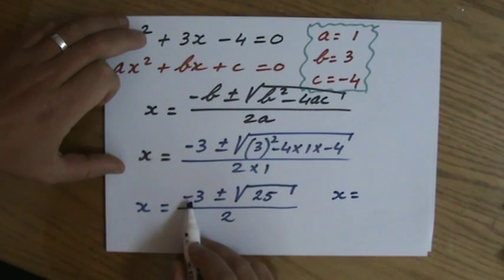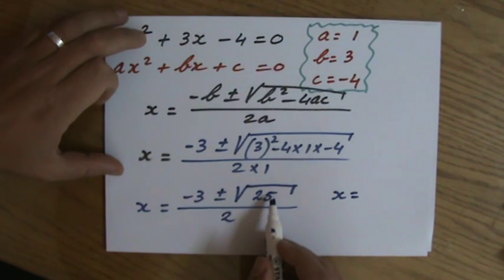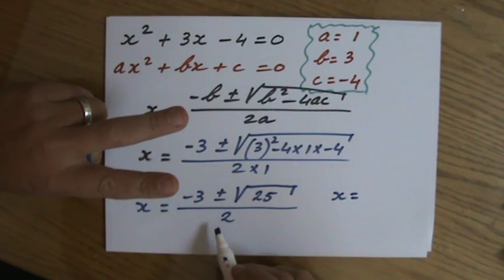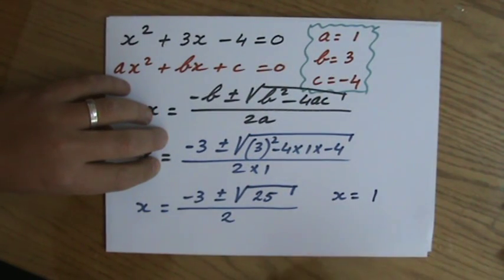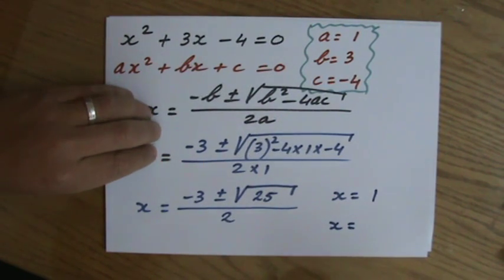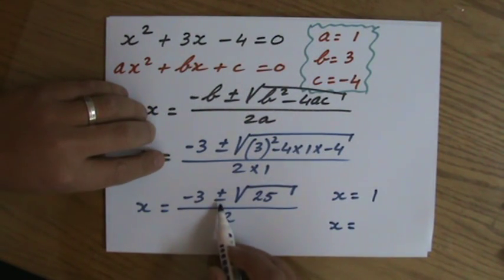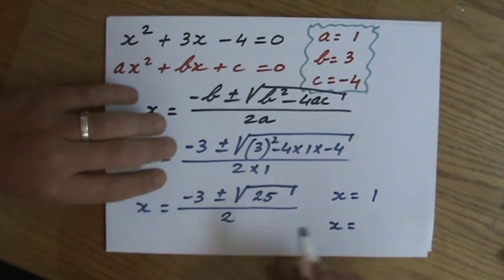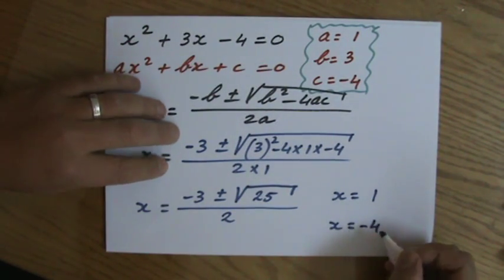So x equals minus 3 plus 5, which is 2, divided by 2, which is 1. Use your calculator to check that. Or x equals minus 3 minus 5, which is minus 8, divided by 2, which is minus 4.